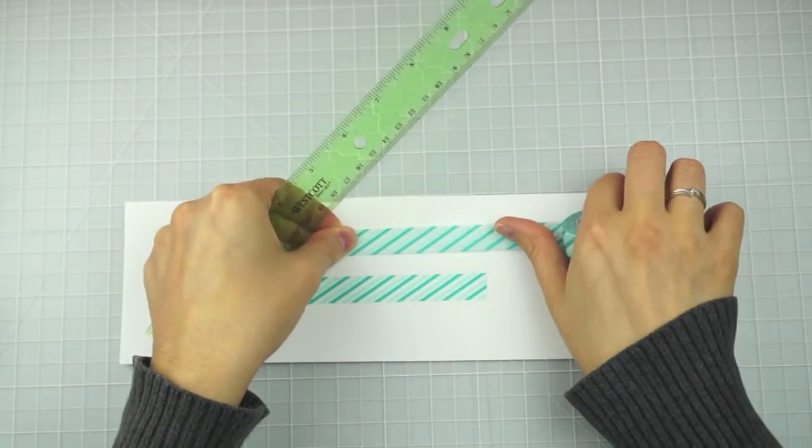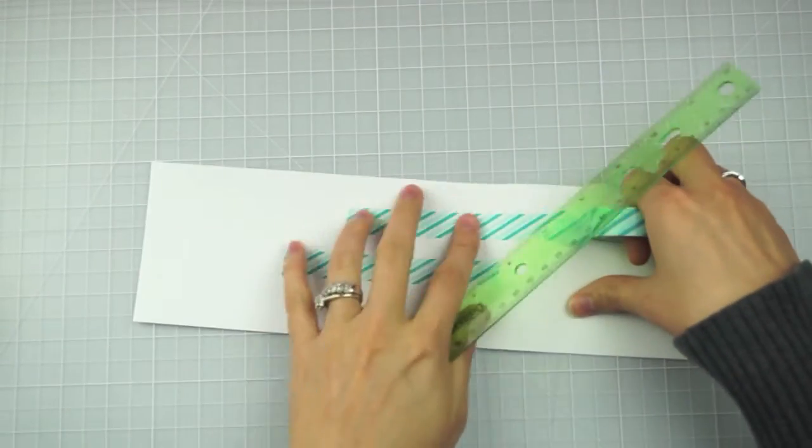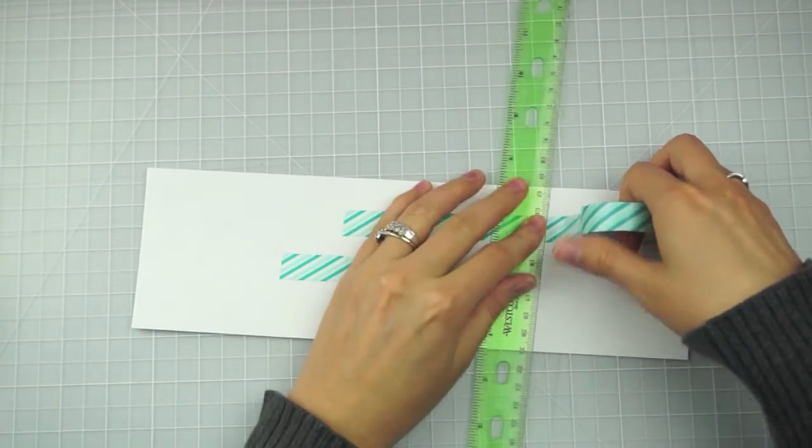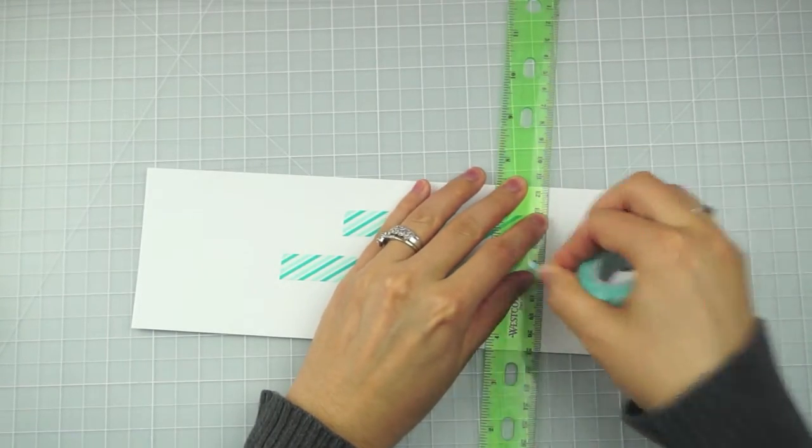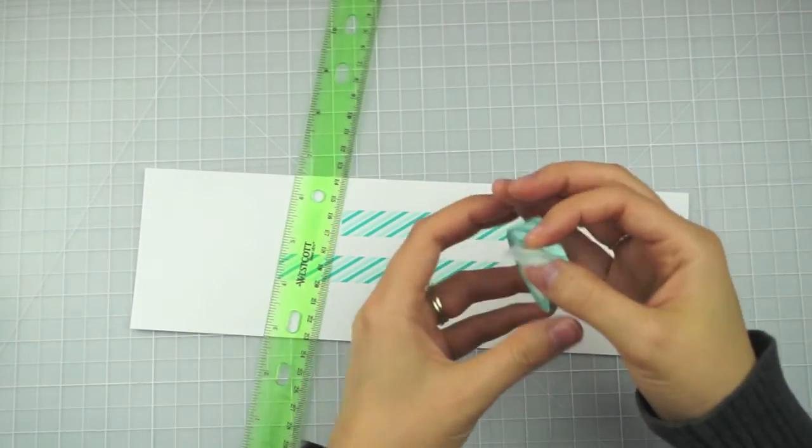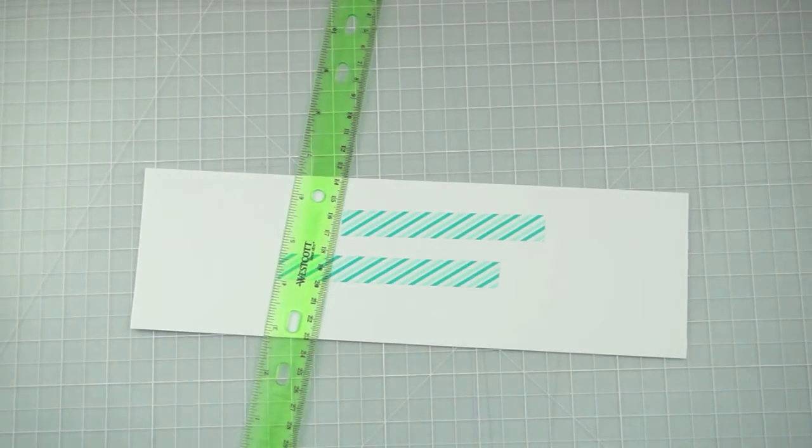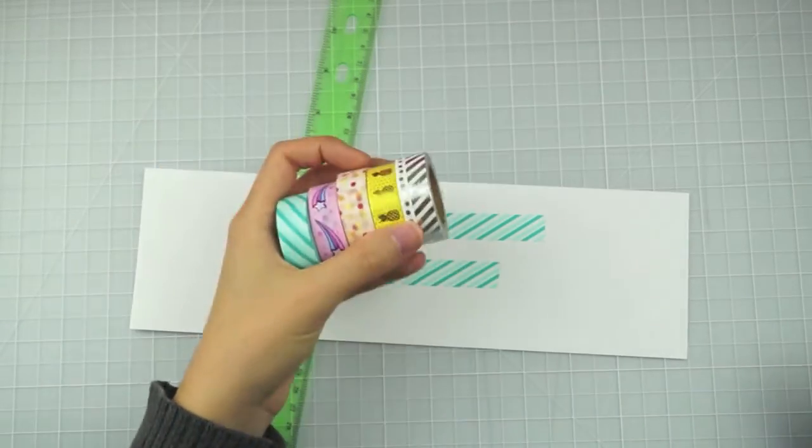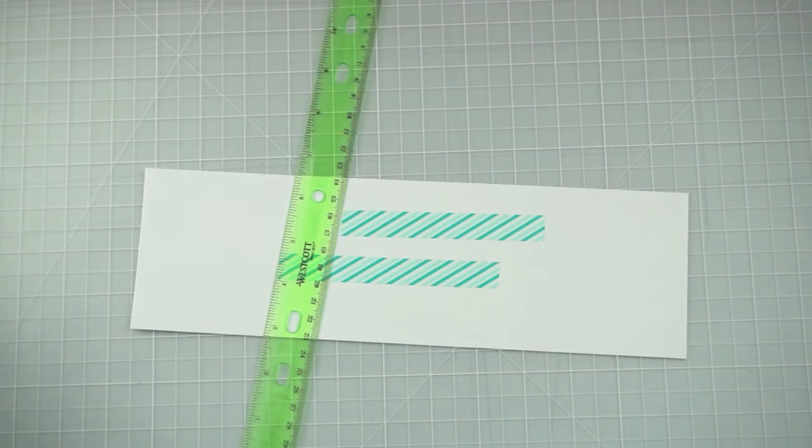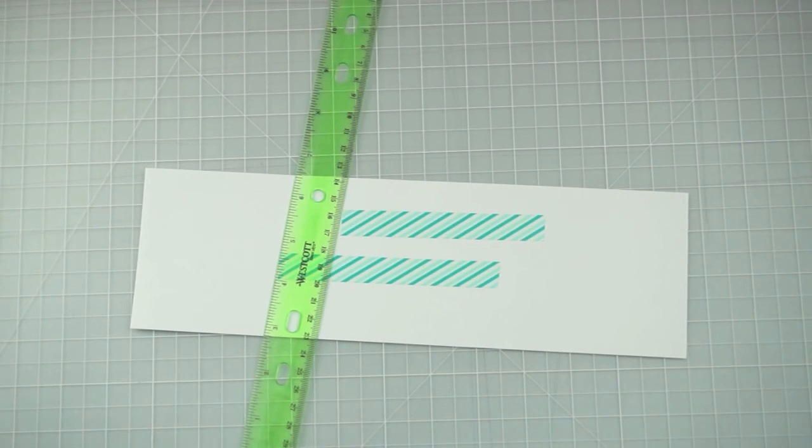Same thing with the ruler. Just put it down wherever you want it. Hold your ruler flush and pull. It's just super easy. I've been using this technique for a long time now. I just absolutely love it. Something that makes applying washi tape so much easier, especially in something like a planner when you want it to be perfectly cut where you want it.